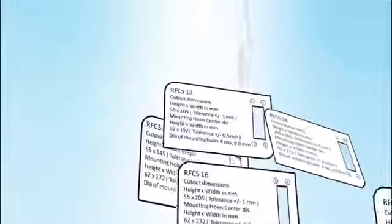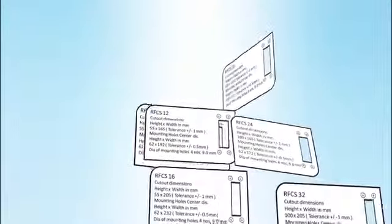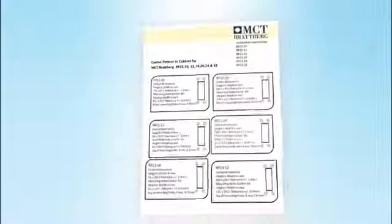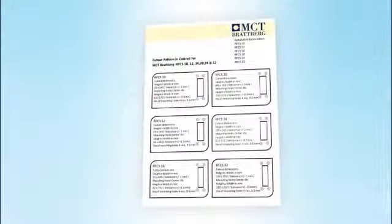Before starting the installation, we need to ensure that the cutout is made as per the size detailed in the RFCS installation manual. In the case where the cables are already passed through the cutout, it is possible to open the selected RFCS frame into two halves.